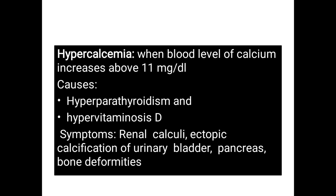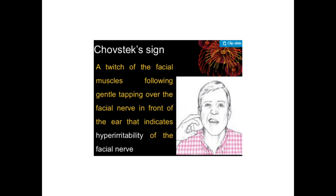Hypercalcemia occurs when blood calcium level is above 11 milligram per dL. Causes include hyperparathyroidism — hyperactivity of the parathyroid gland causing increased secretion of PTH — and hypervitaminosis D. Symptoms include renal calculi because increased excretion of calcium leads to calcium oxalate stones, ectopic calcification of the urinary bladder and pancreas, and bone deformities.